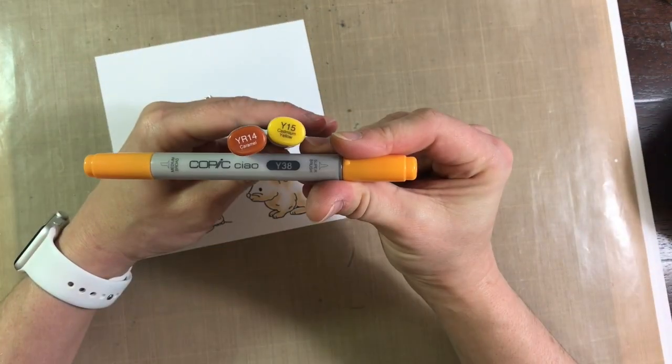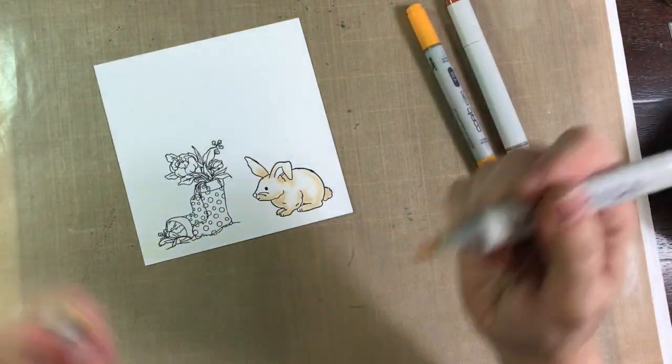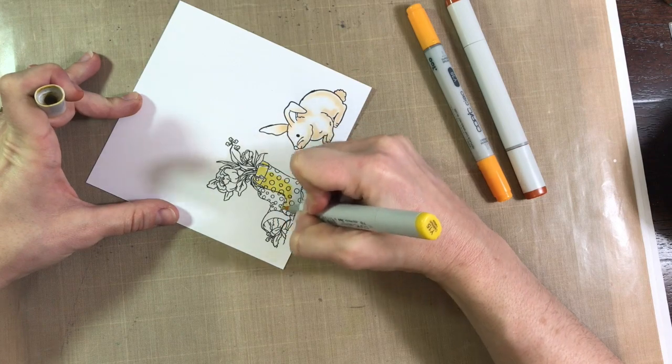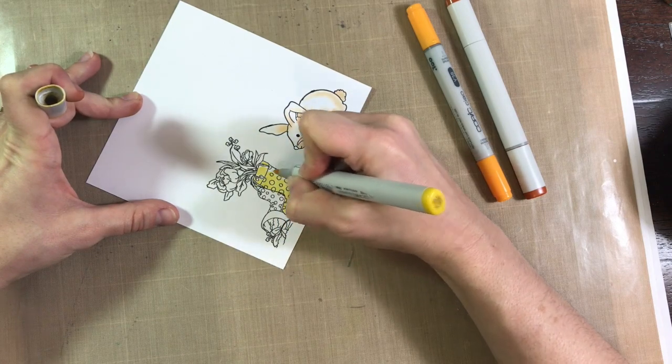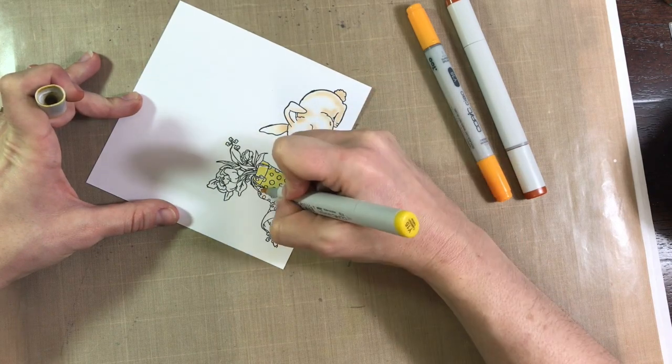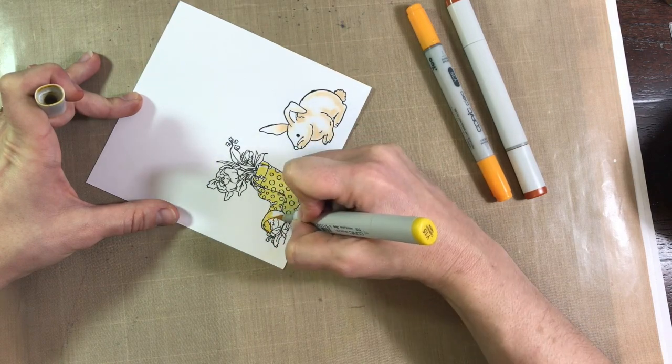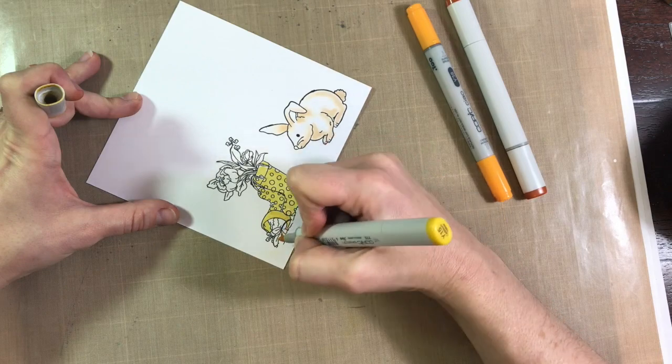And here we have YR14. That's my darkest color. Y15 and Y38 to do the boots. And again, lazy with the dots. I'm just going to color over them and use my gel pen like I did in the last video just to kind of cover those dots.